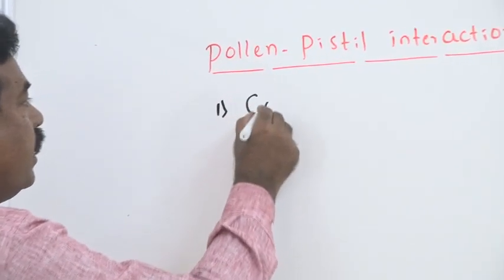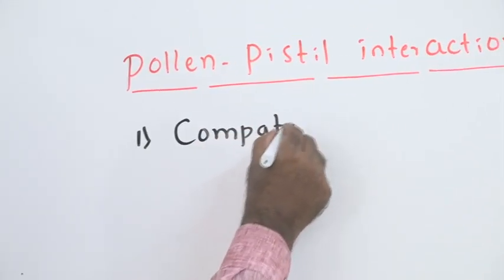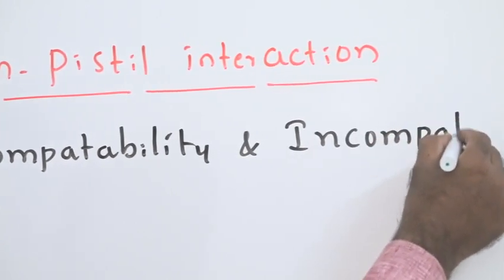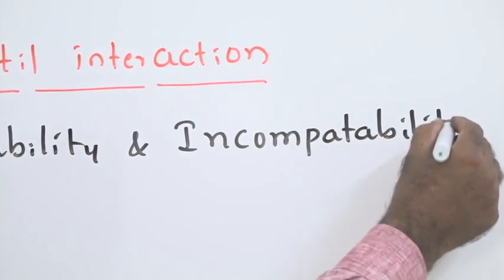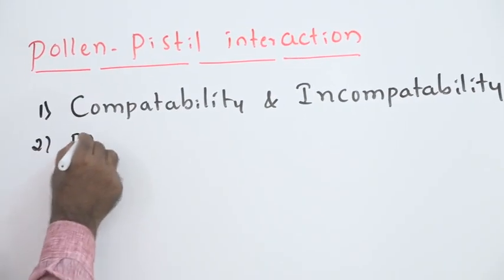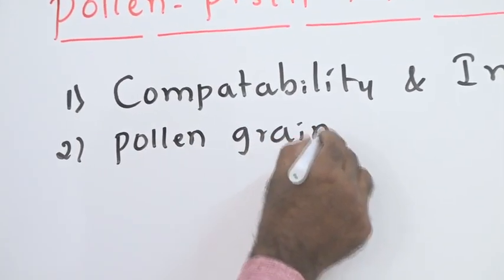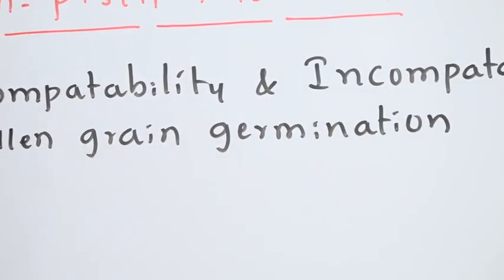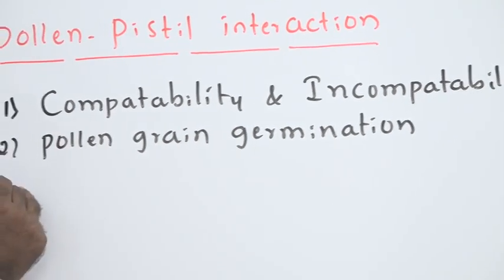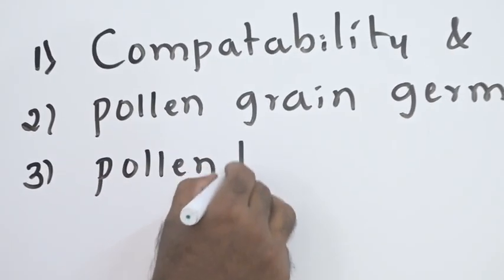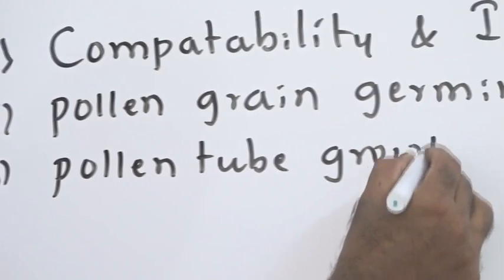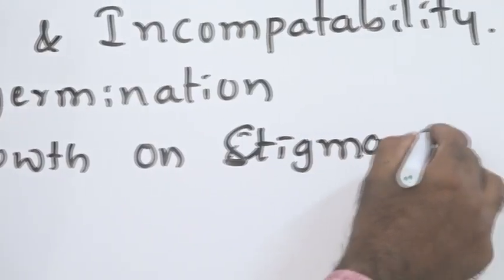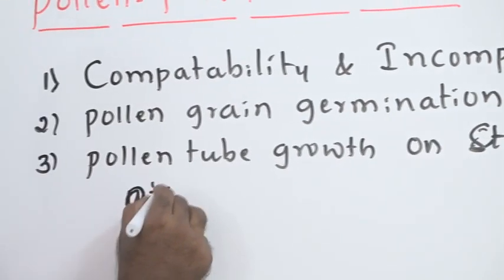The first concept is: what do you mean by compatibility and incompatibility? Second, how pollen grains germinate on stigma — that is pollen grain germination. Third, pollen tube growth on stigma and also within the pistil.